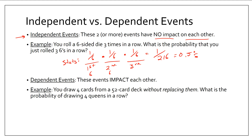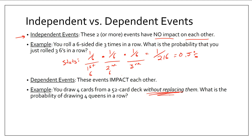Let's look at dependent events. They're almost just as easy, except with dependent events the events impact each other. So after the first event happens, that's going to impact the second event. Here's my example: you draw four cards from a 52-card deck without replacing them. If I have 52 cards and I choose one of them, how many cards do I have left? Now there are only 51 cards, so the second draw has a slightly different probability.